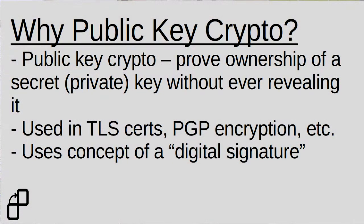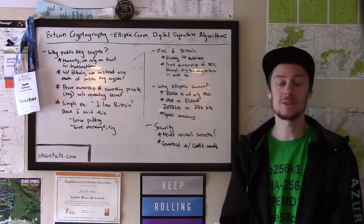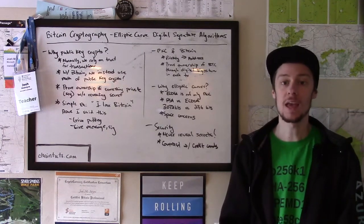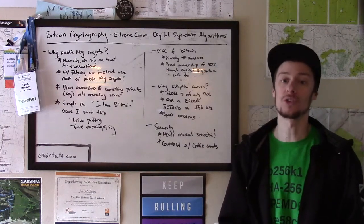Fundamentally, what public key cryptography is used for is to prove the ownership of something private, in this case a secret or private key, without ever having to reveal what that private key is. This is in contrast with symmetric cryptography systems, where if you wanted to send somebody an encrypted message, you might have to pre-share a secret key with them. In public key systems, you never have to reveal your secret key.